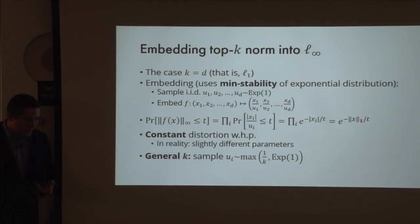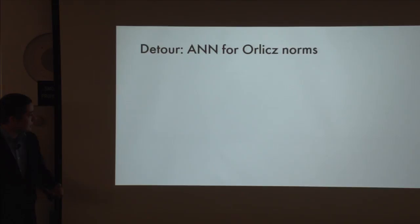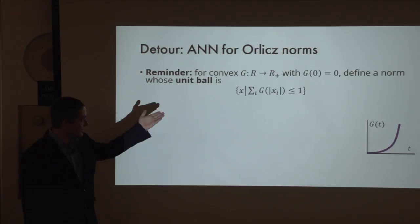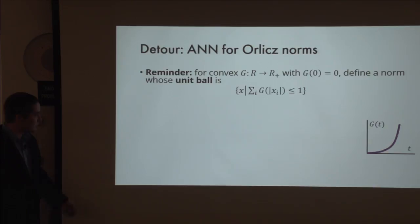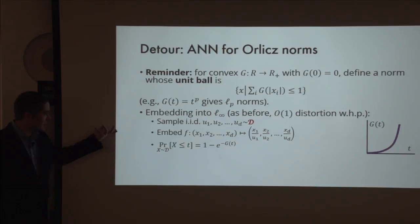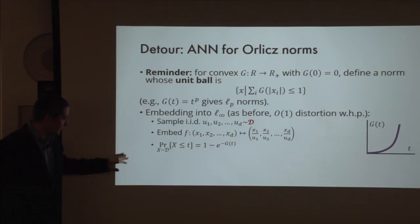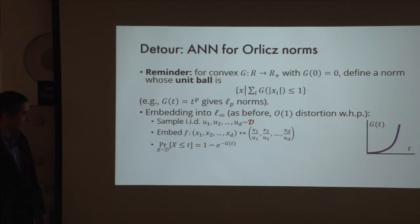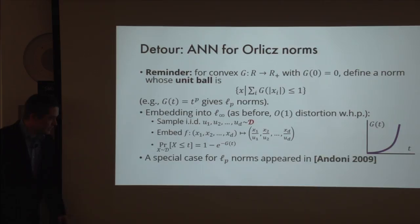The same technique handles general Orlicz norms. Recall that an Orlicz norm's unit ball is defined by the expression that some function G of your coordinates is at most one. What we can show is that you can always embed it into L-infinity with constant distortion with high probability. Instead of exponential random variables, you use different random variables designed specifically for the given G, where the CDF of this distribution is a formula depending on the function G. Before this was known for L_p norms and looked like a complete mystery, but when we realized it worked for all Orlicz norms it became very clear.